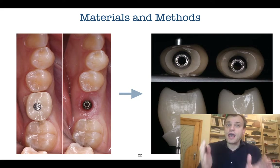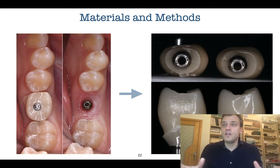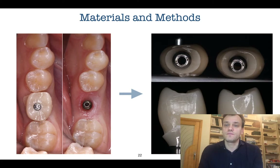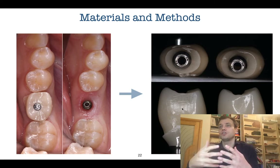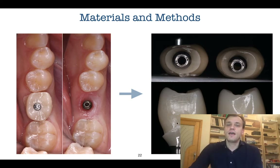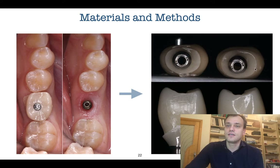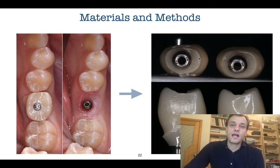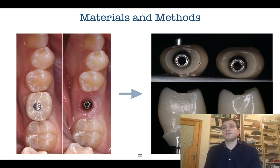We had 10 cementations in each group. After removing everything, we mounted the restoration and abutment on a special device, photographed them, and calculated whether cement remnants were below the cementation margin or not. For example, here we can clearly see the abutment, the restoration, and the cementation margin. In some cases, only a small amount of cement was below the margin; in others, more; and in some cases, there were no cement remnants below the cementation margin at all.